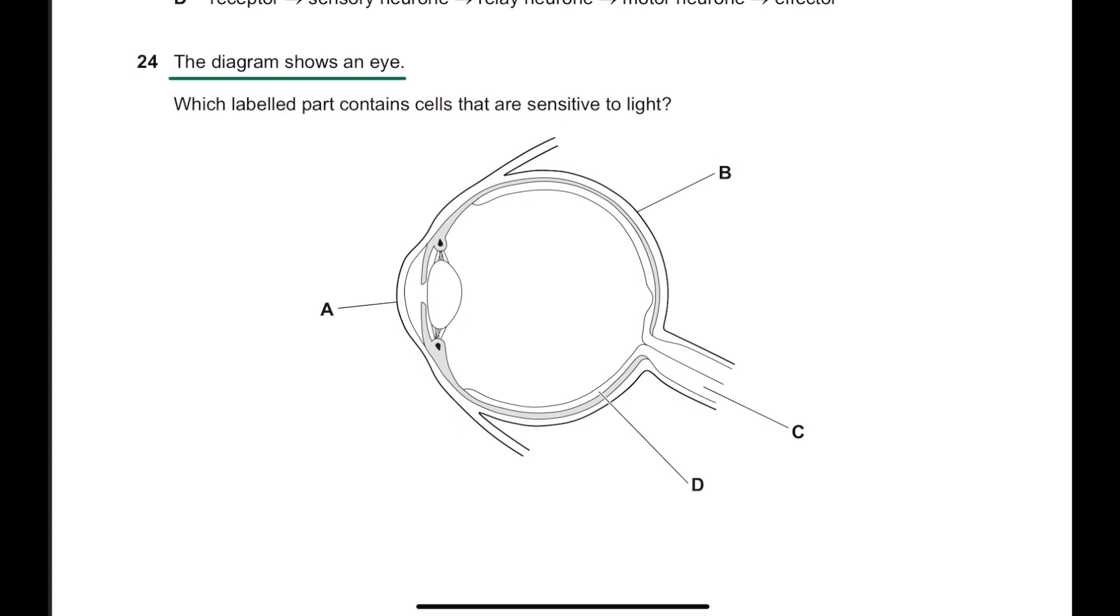The diagram shows an eye. Which labeled part contains cells that are sensitive to light?